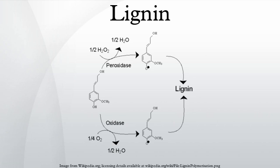Highly lignified wood is durable and therefore a good raw material for many applications. It is also an excellent fuel, since lignin yields more energy when burned than cellulose. Mechanical, or high-yield pulp used to make newsprint contains most of the lignin originally present in the wood. This lignin is responsible for newsprint's yellowing with age.